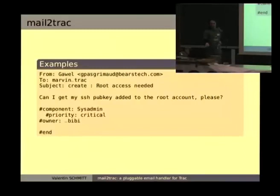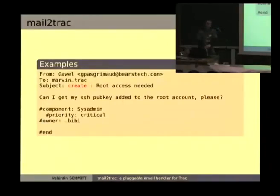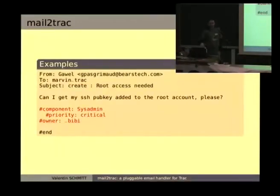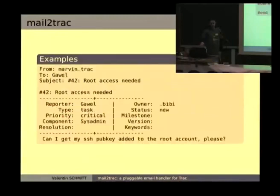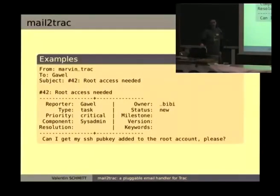That's just the email he sent. So what do we get? Those are the keywords that are parsed by the Mail2Trac plugin — the tags I just explained, including 'create', and the 'end' tag. And that's the answer you get from the Trac notification. We can see the right fields have been set.